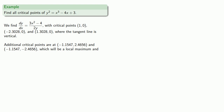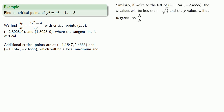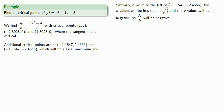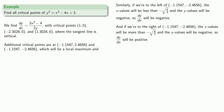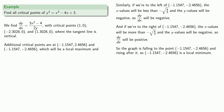Similarly, for the other critical point — same x-coordinate but negative y value — to the left, x is less than negative square root of 4 thirds and y is negative, so the derivative is negative, since the denominator is negative and the numerator is positive. To the right, x is greater and y is still negative, making the derivative positive. The graph is falling to the point and rising after it, so this point is a local minimum.